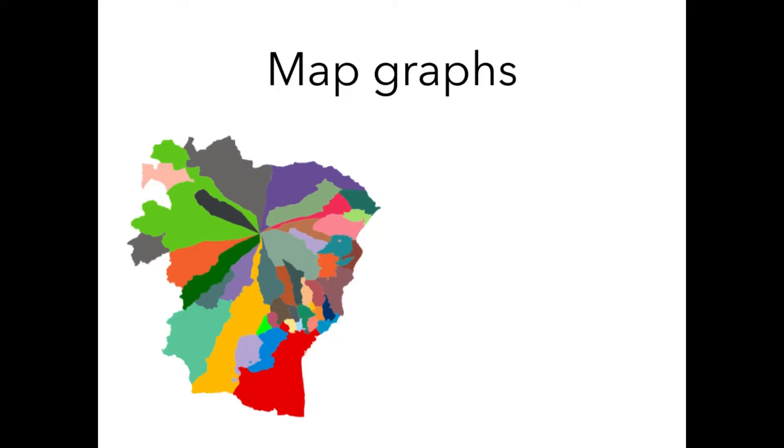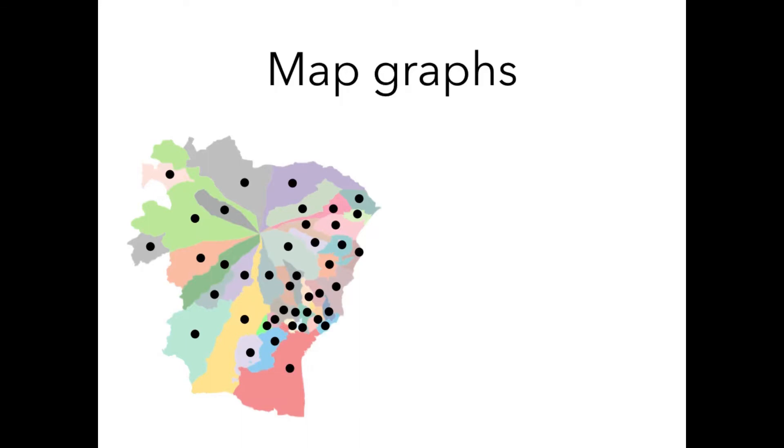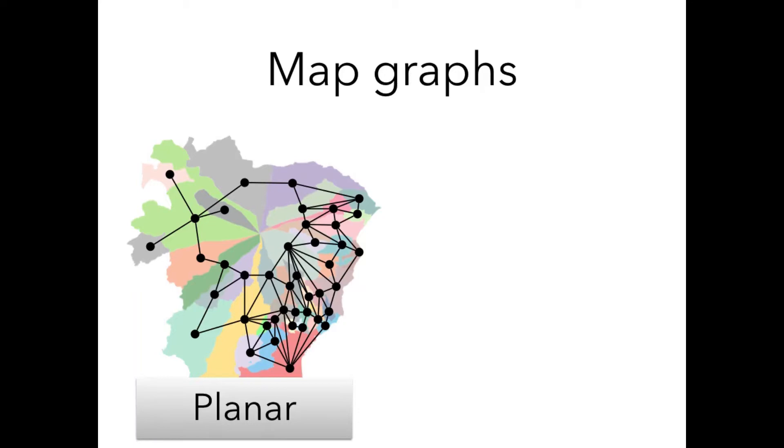So what are those map graphs? To define a map graph, imagine that you have a map. Actually, this is some real map, and this vertex here is the Etna volcano, and this is the map of municipalities of Catania. Anyway, you take any map, which is a set of internally disjoint connected regions on Euclidean plane, and for every region you create a vertex. Now you can consider any two neighboring vertices, neighboring means they share some border, and you could add an edge between those two vertices. If you do that for every pair of neighboring vertices, you will obtain a planar graph, not yet map graph. In fact, every planar graph can be constructed in such a way.